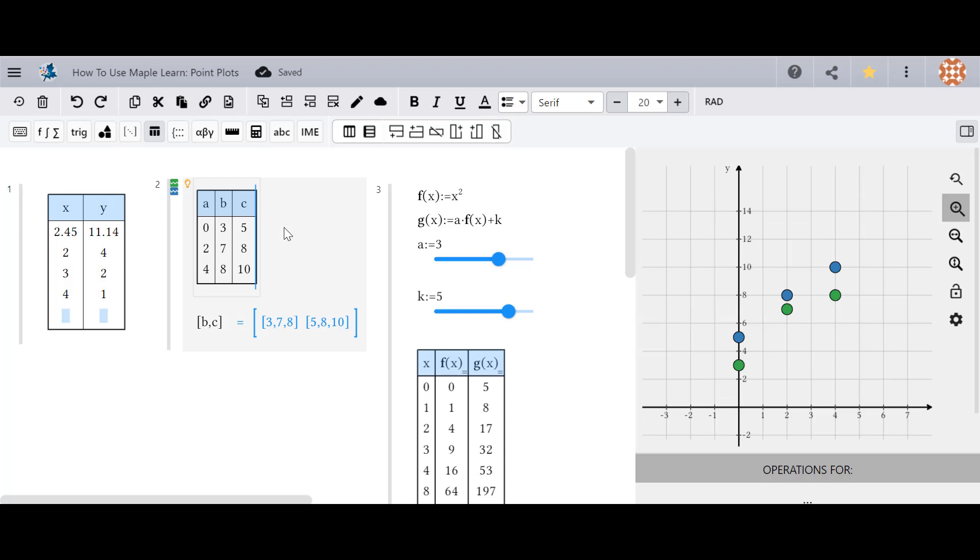If you have more than two columns in your table, MapleLearn will plot these points using the first column as x-coordinates, and the other columns as corresponding y-coordinates. Note also the corresponding color of your points with the little squares.